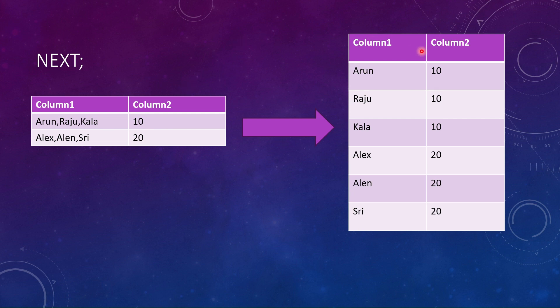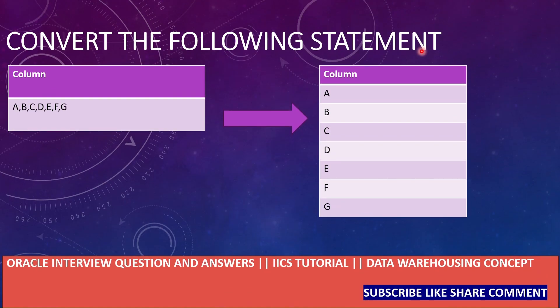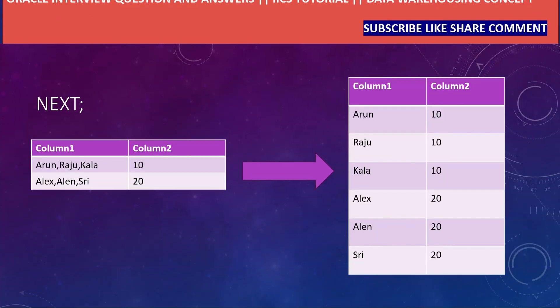Welcome to Oracle interview question series. Sometimes the interviewer may ask: given one column with one row having comma-separated values, how do you convert those values into individual rows? I got this question from the comment section, where one learner from SQL posted asking for an explanation of this interview question.